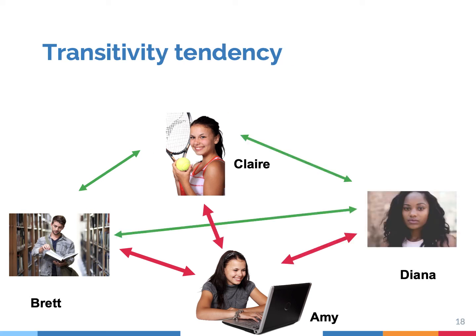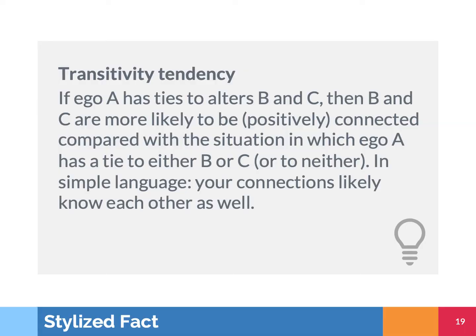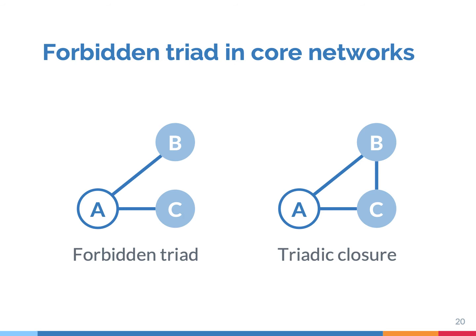So when we look at your core network, it's very likely that many of your friends know each other. This transitivity tendency is a very important stylized fact. If you are ego A and you have two persons B and C, then B and C are very likely to be connected. According to Granovetter, strong ties always show this pattern of triadic closure and transitivity. He called a triad in which A is befriended with B and C, but B and C not with each other, a forbidden triad. It's very unlikely this happens, according to Granovetter, for many reasons — one reason is opportunity. For example, you organize a party, invite all your friends, and then your friends get to know each other.